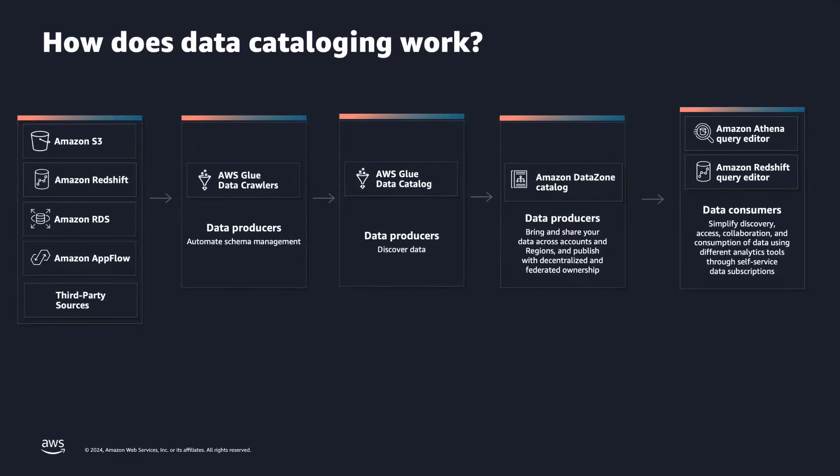So how does everything work together? Going from left to right on the screen, on the left side you can see all the sources available — for example, Amazon S3, Redshift, RDS, and so on. In order to harvest the metadata from these sources, we can run AWS Glue Data Crawlers, which harvest metadata from the sources and publish that metadata into the AWS Glue Data Catalog. There, you can enrich that information with technical metadata and also share those data assets with your technical users.